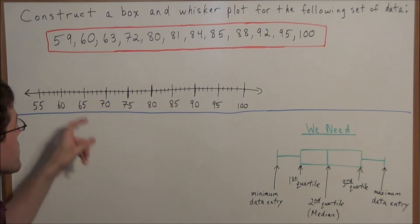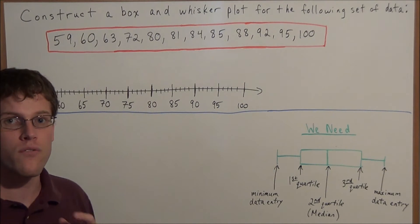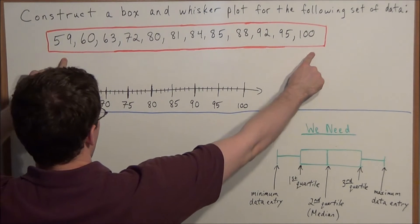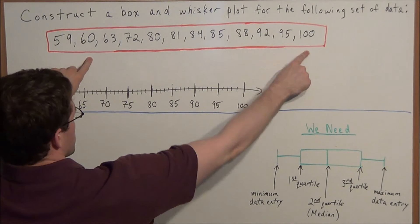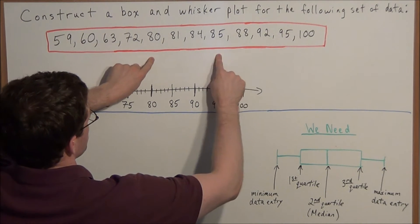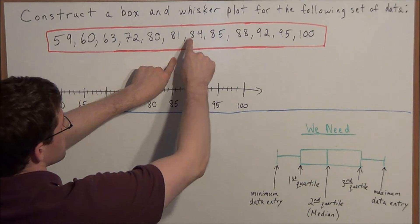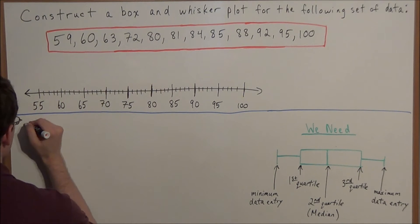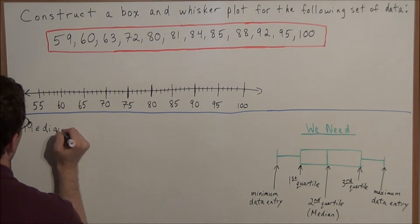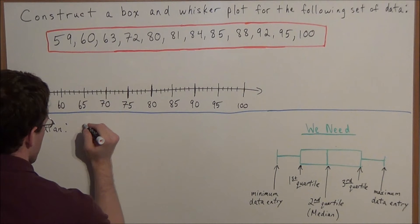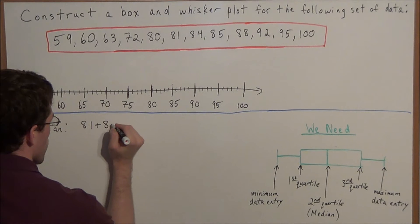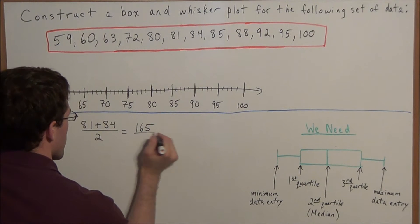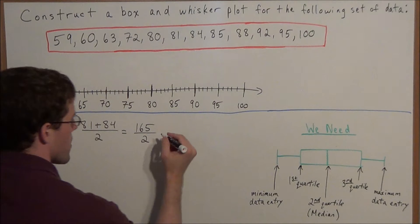We start off by finding the median of this data set. Since there are 12 terms, we need to find the average of the middle two terms. We start at the endpoints and march towards the middle one at a time from each side. By the time we get to the middle, we're between 81 and 84, so we find their average: 81 plus 84 divided by 2 equals 165 divided by 2, which simplifies to 82.5.